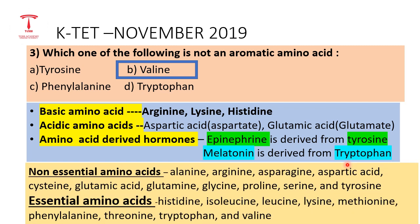Translation involves 20 amino acids, which are classified into essential and non-essential amino acids. Non-essential amino acids include Cysteine, Glutamic Acid, Glutamine, Glycine, Proline, Serine, and Tyrosine — the body can synthesize these on its own.